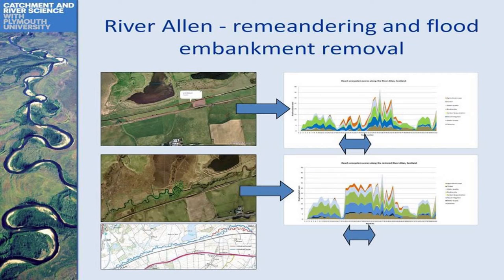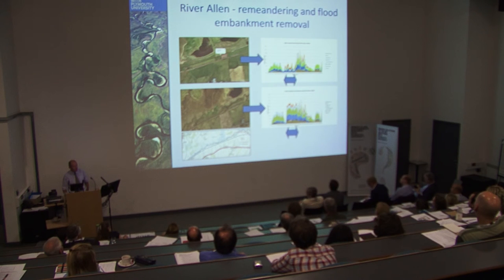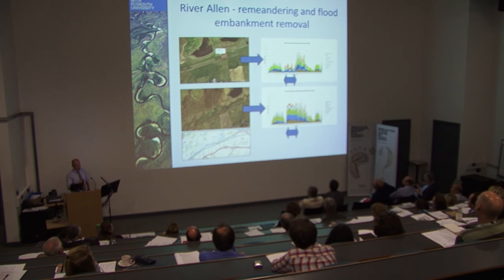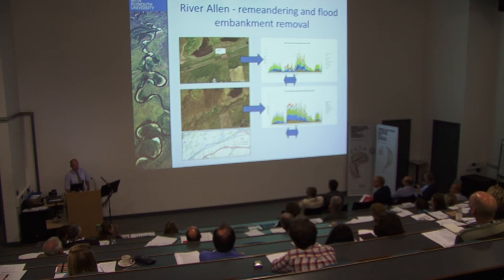Just finally, we're developing tools to make these assessments. The River Allen in Scotland was straightened in the 19th century to allow for the railway and floodplain agriculture. There's a plan to remeander it and remove the embankments, and what our development tool is showing is that going from an area where ecosystem services have been degraded, we can now measure how we achieve a more equitable production of ecosystem services. We believe this will be a useful tool for thinking about how we use our rivers and river floodplains in the future and how we can restore them.